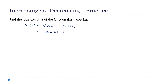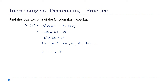When does this equal zero? Divide both sides by negative 2: sin(2x) = 0. The sine equals zero at integer multiples of π. So 2x equals ..., −2π, −π, 0, π, 2π, and so on. Dividing by 2, x equals ..., −π, −π/2, 0, π/2, π, and so on.